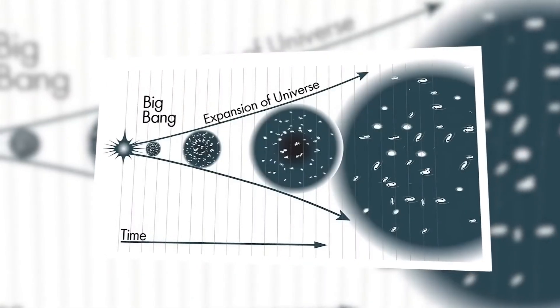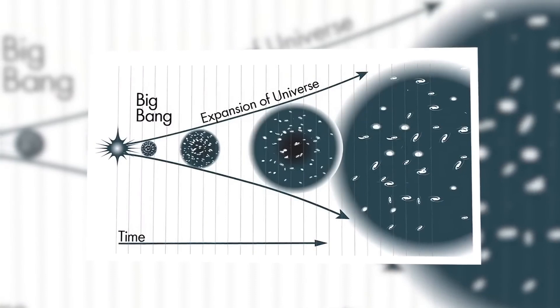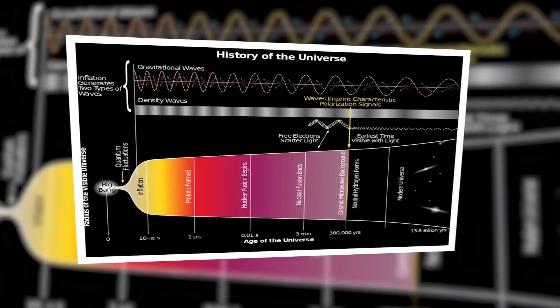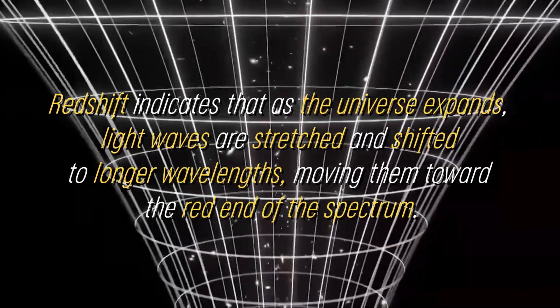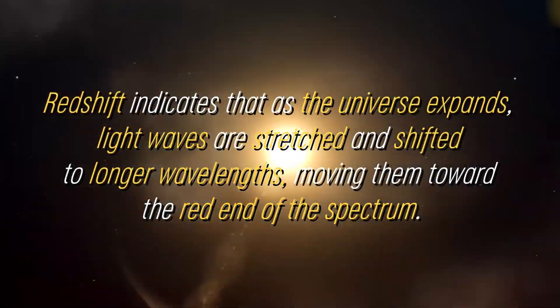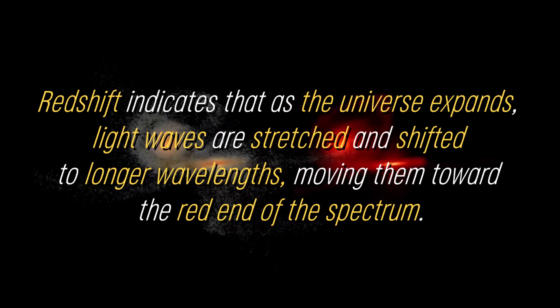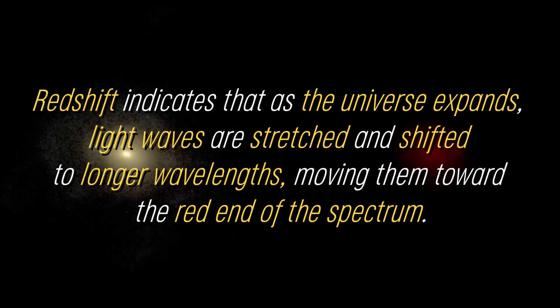Scientists have observed the effects of this expansion through various observations, such as the redshift of light from distant galaxies. Redshift indicates that as the universe expands, light waves are stretched and shifted to longer wavelengths, moving them toward the red end of the spectrum. During the expansion, all the stuff that makes up our universe was compressed into an incredibly small volume.